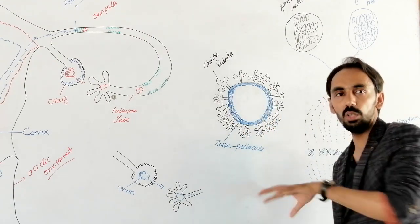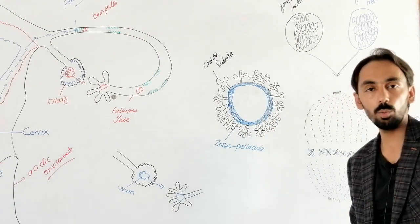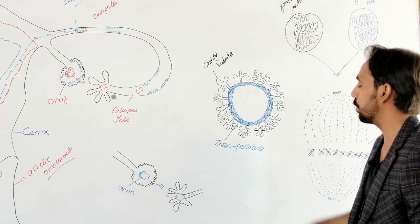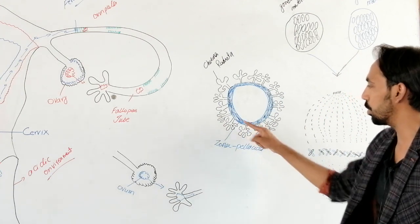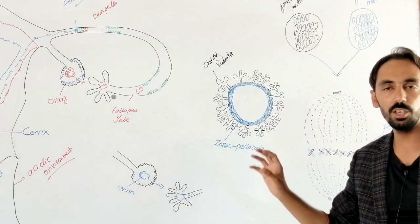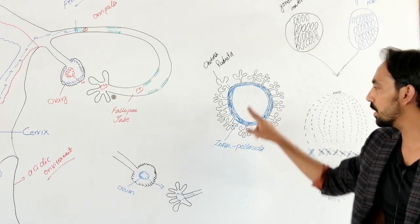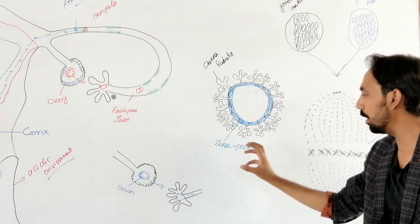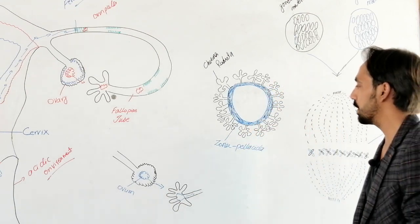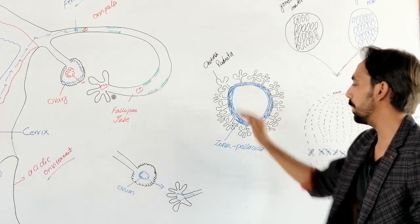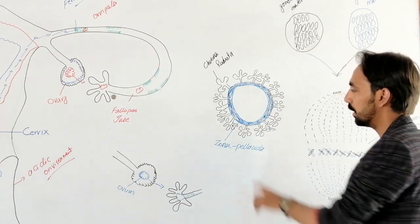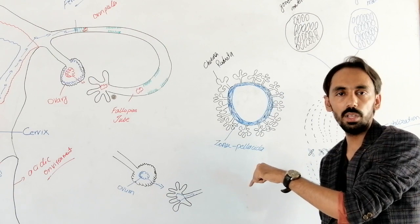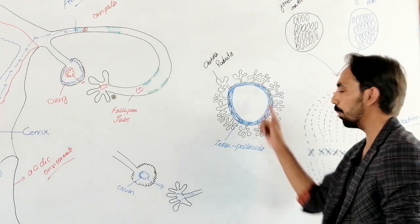The zona pellucida is actually made up of glycoprotein. The main purpose of the zona pellucida is to provide nutrition to the cell, because its vital role is to nourish the cell, as the zona pellucida itself is made up of glycoprotein.